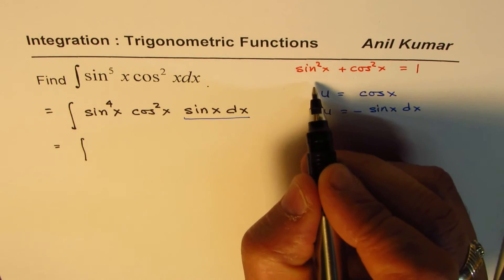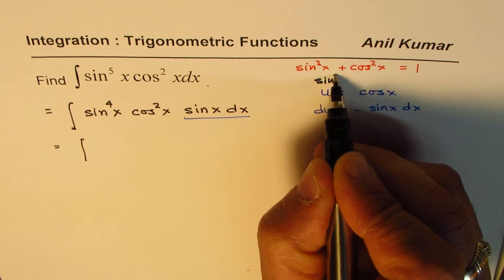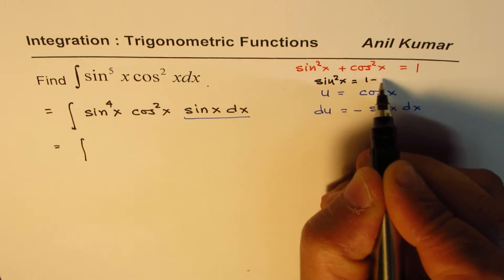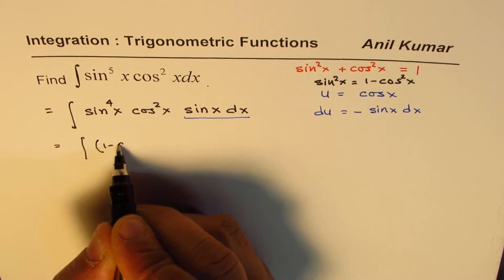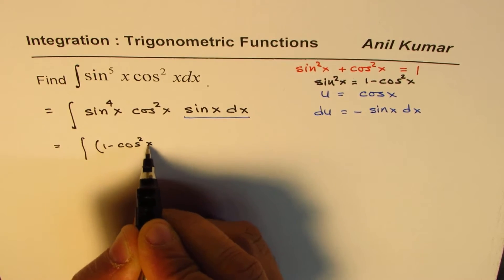So sine into cos means sine square x will be equals to 1 minus cos square x. So we'll write this as 1 minus cos square x whole square.